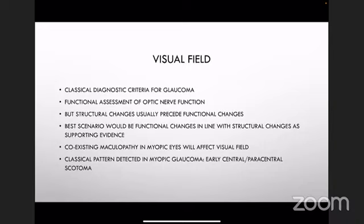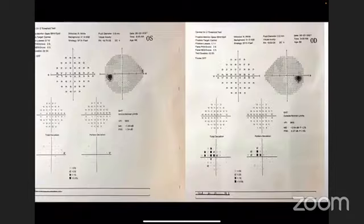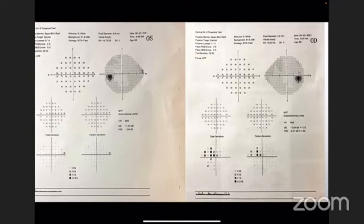However, in the real world, life is not always easy. There will be coexisting maculopathy in myopic eyes, which will also affect the visual field. A classical description of myopic glaucoma is early central or paracentral scotoma, but it's not always the case that you can find something just like the textbook. This is one of our patients — referred for glaucoma suspect with increased cup-disc ratio — showing some early changes which are atypical, more like central involvement.